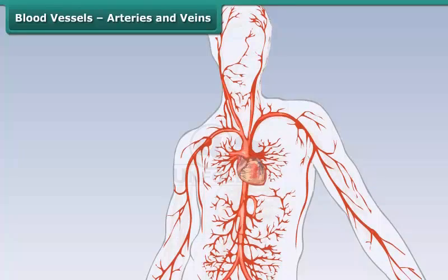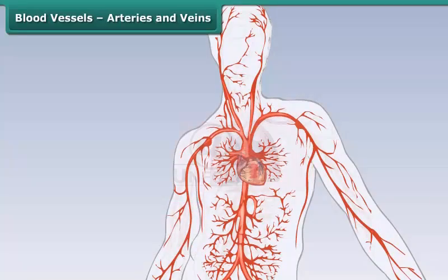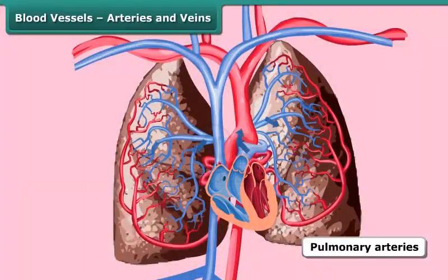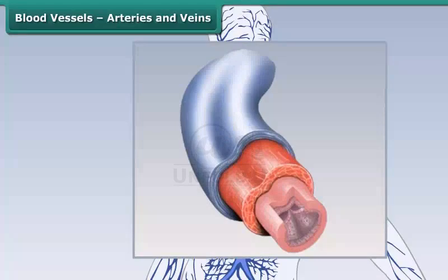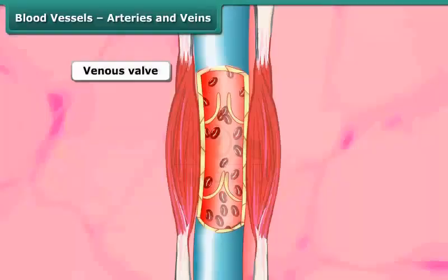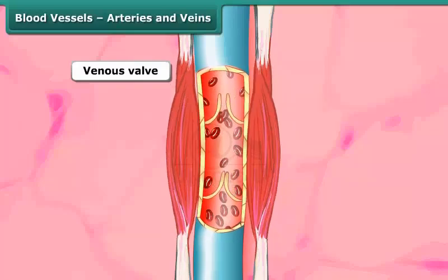Arteries are blood vessels with thick walls. They carry oxygenated blood from the heart to all other parts of the body. Veins are blood vessels with thin walls, close to the skin. They carry blood from the different parts of the body to the heart. Most veins have flaps known as venous valves that ensure blood flows only towards the heart, preventing it from flowing back. The pressure of blood in the veins is lower than in the arteries.